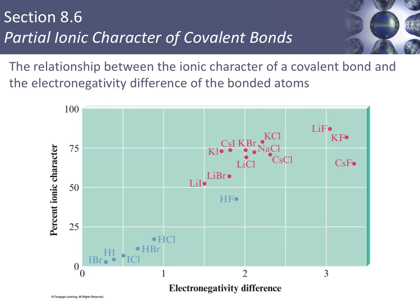On the x-axis of this graph, we have the electronegativity difference between two atoms, and on the y-axis we have percent ionic character. The red dots are what we would typically call ionic compounds — metal/non-metal combinations with larger differences in electronegativity and higher percent ionic character. The blue dots have lower differences in electronegativity and lower percent ionic character, and are what we would typically call covalent bonds — combinations of two non-metals.